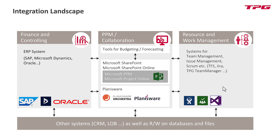Every arrow represents a possible integration use case where we transfer data from one system into another to get processes integrated — offering team members the possibility to track against Jira work items that belong to a project in Planisware Enterprise, which reports back into a project in SAP PS with a corresponding WBS structure. So we have the full chain of processes integrated, which also means data are being integrated.